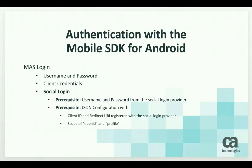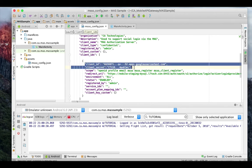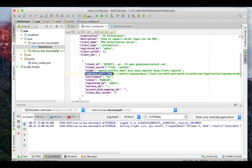For social login authentication, you will need a username and password from the social media provider you plan to use. Your JSON configuration must have a client ID, secret, and redirect URI, which are registered with that social media provider, and include a scope of OpenID and profile. I plan to use my Google credentials, so I have registered mine with the Google API console. Review your JSON configuration. Verify that the client ID, secret, and redirect URI are registered with the social media provider you plan to use. Verify that the scope includes OpenID and profile.